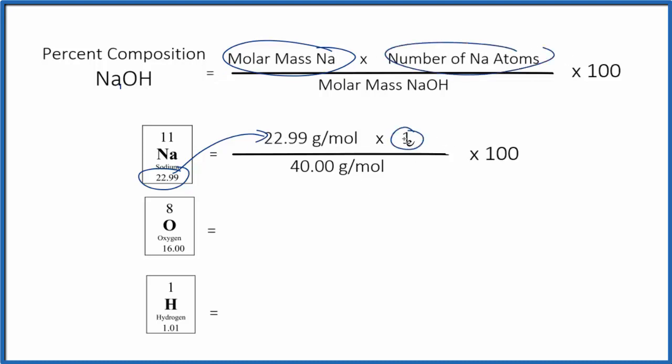And then we take these, we multiply, and divide by the molar mass of sodium hydroxide. That's 40.00 grams per mole. If you need help calculating that, there's a link at the end of this video to help you do that.